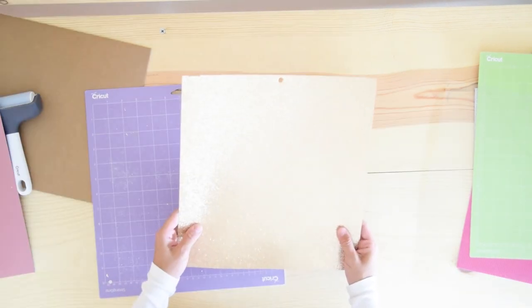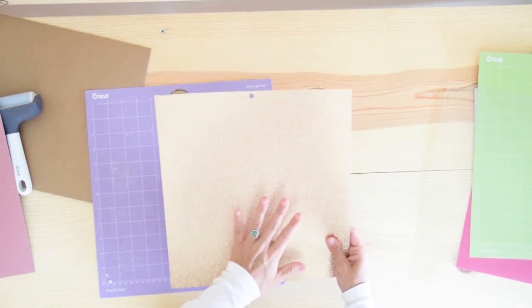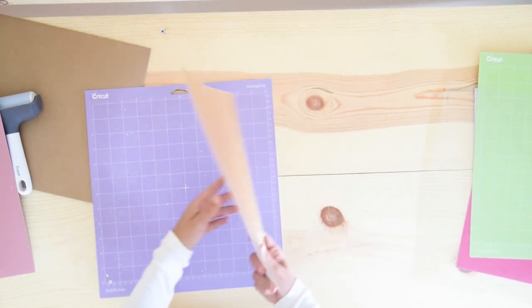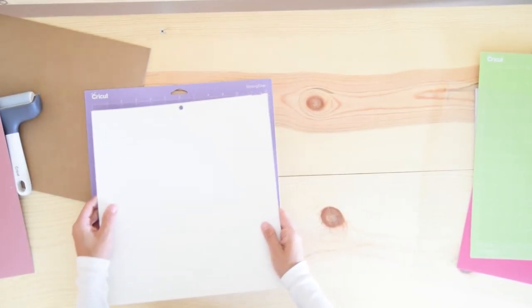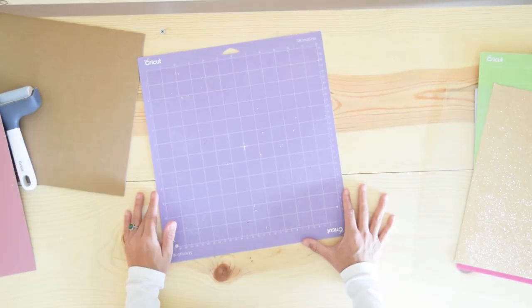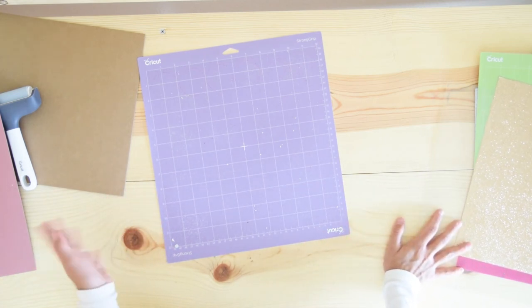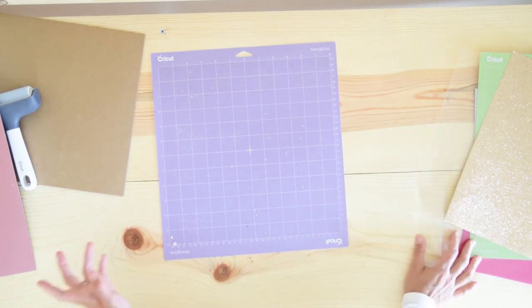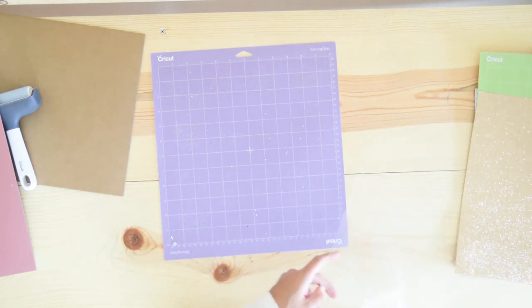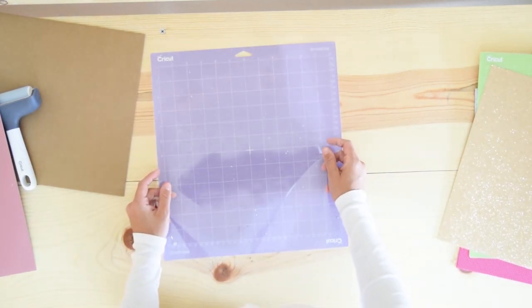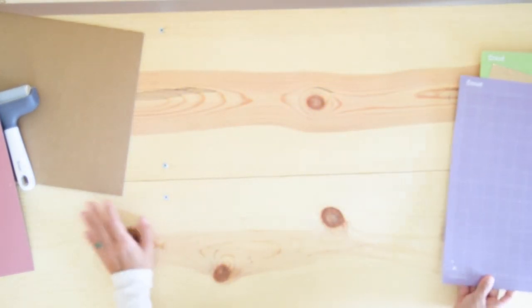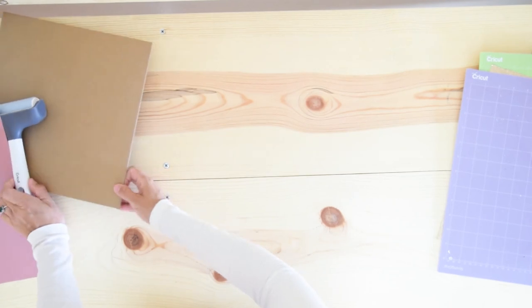Plus, if you're working with coated materials like glitter cardstock and you're gonna score, you always have to score with the coated material side down. I have this information in a couple of articles and I will link them in the description down below so you can learn all of the techniques.